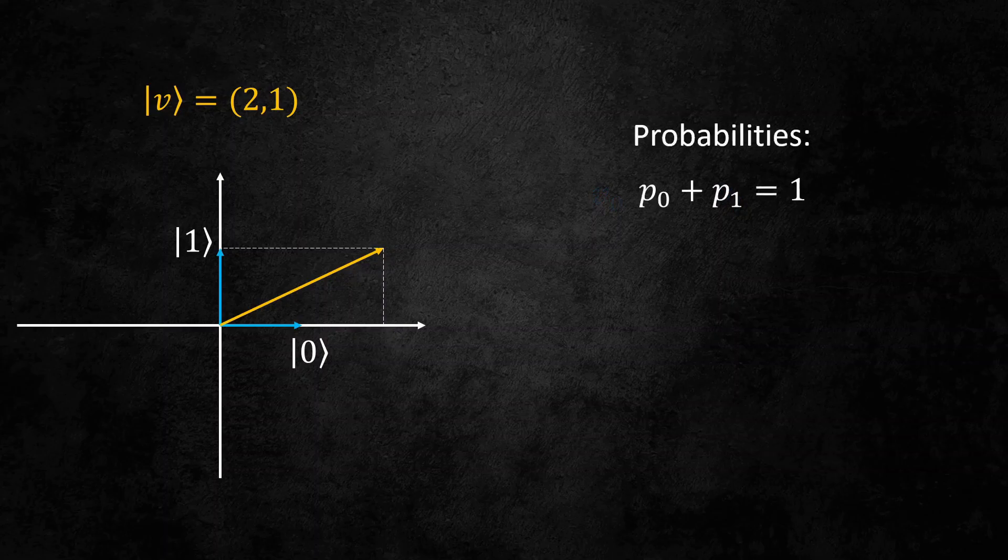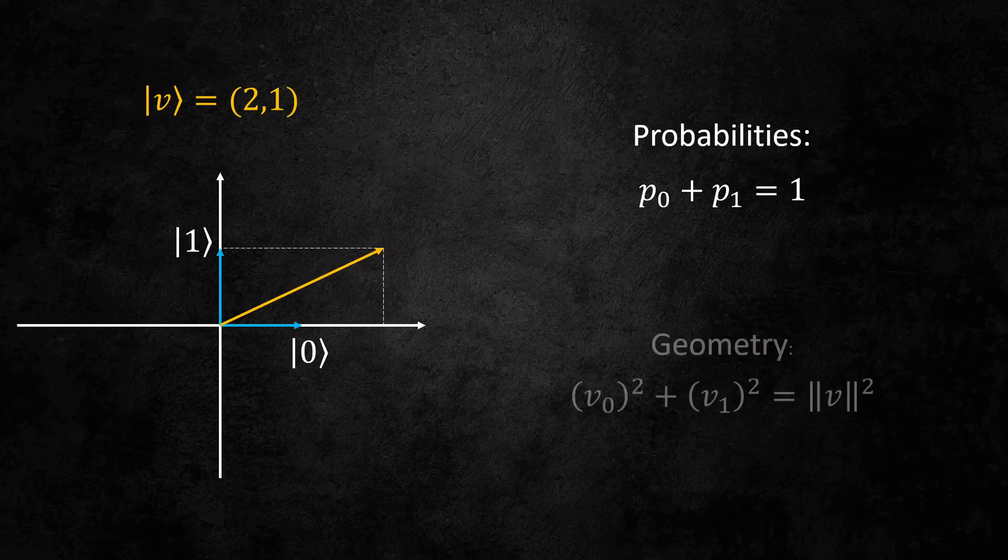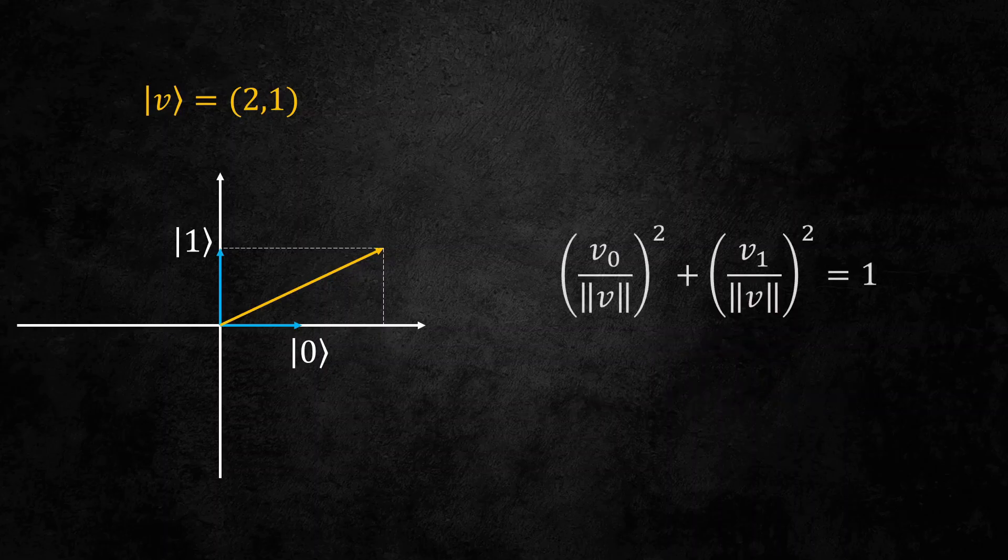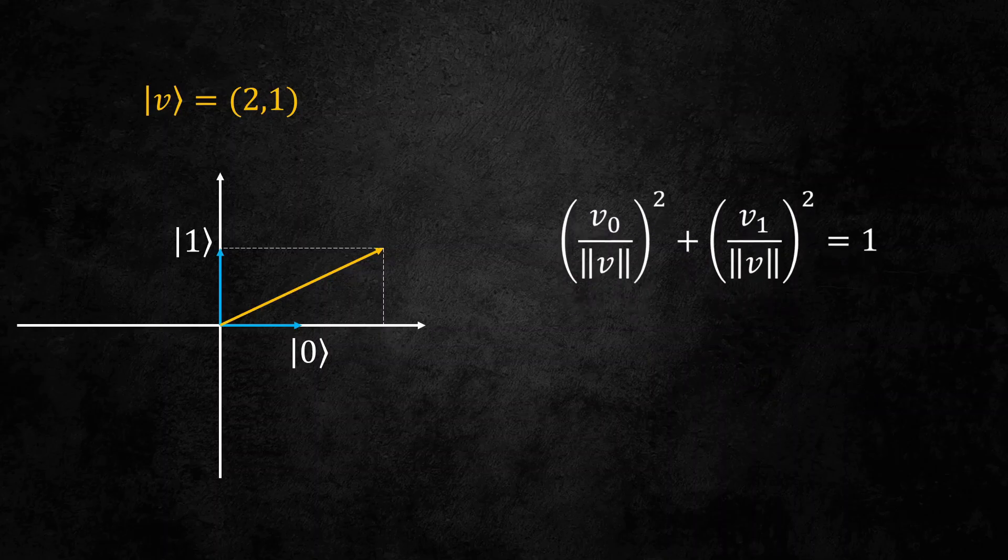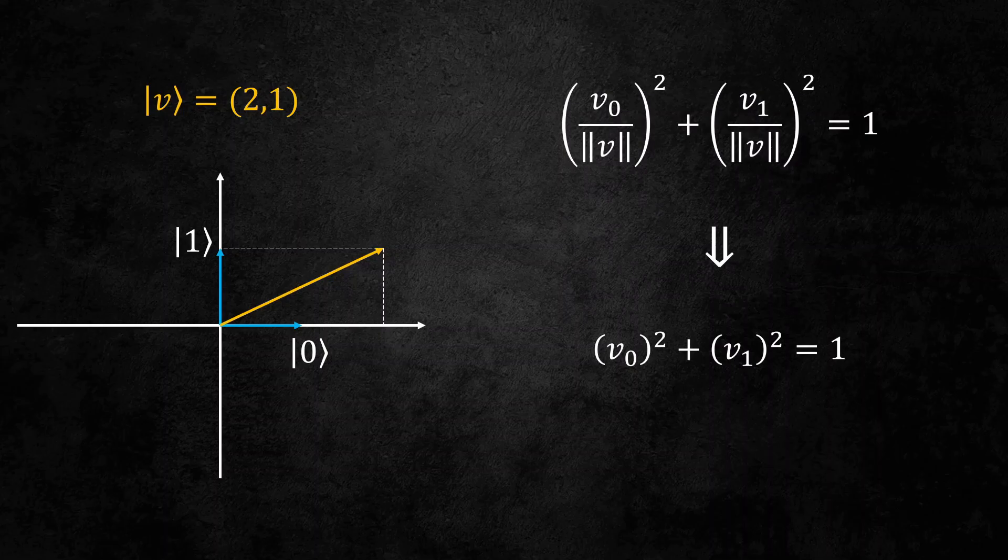From probabilities, we know that the probabilities of measuring 0 and measuring 1 must add up to 1. And from geometry, the Pythagorean theorem tells us that the x-coordinate squared plus the y-coordinate squared is equal to the norm squared. If we combine these equations together, we get that the normalized coordinates squared add up to 1. This tells us that we should represent states by vectors with length 1. And this equation is the familiar unit circle equation.